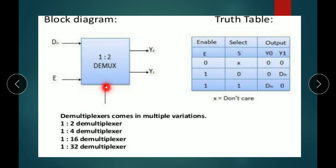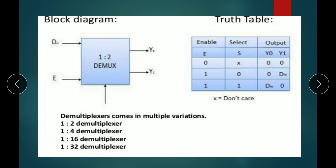For the 1-to-2 DEMUX truth table: for select line 0, output Y1 is selected; for select line 1, output Y0 is selected.